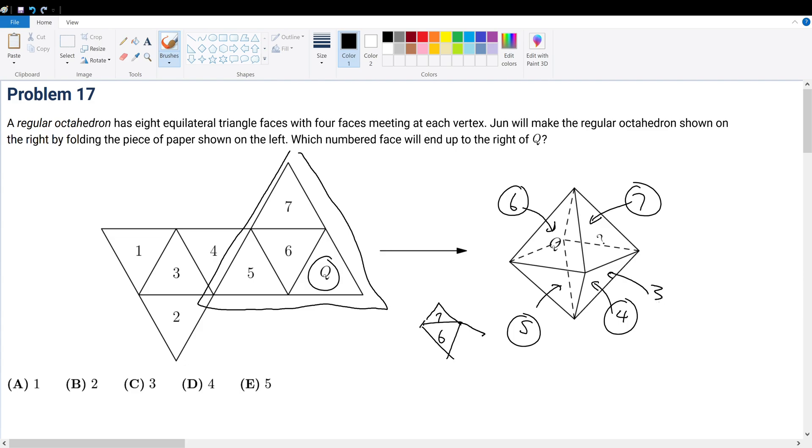So that means from process of elimination, this side face right here would have to be 1. And if that's 1, then the answer choice would be A. So there's really no technique to this. It just comes down to being able to visualize how the faces would fold up.